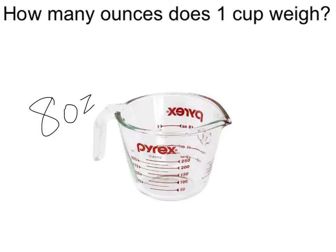Most measuring cups show a scale for cups and a scale for ounces. In many parts of the world, cooks use the weight of ingredients rather than the capacity of a measuring tool in their recipes. One reasonable rule of thumb is the expression: a pint's a pound the world around. One cup equals 8 ounces.